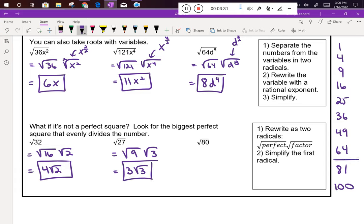80 would be way down here. It's not divisible by 64 or 49 or 36 or 25, but it is divisible by 16. So I'm going to rewrite this as the square root of 16 times the square root of 5, because 16 times 5 is 80. I take the square root of 16 because I can; it's 4. I can't take the square root of 5, so it stays inside.